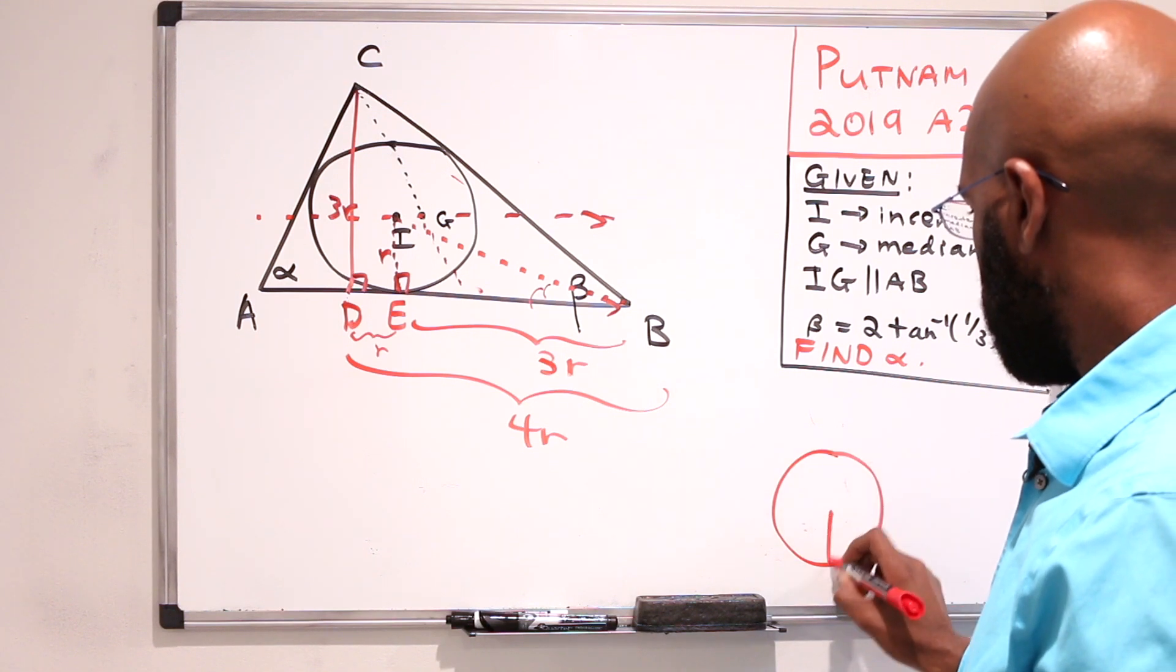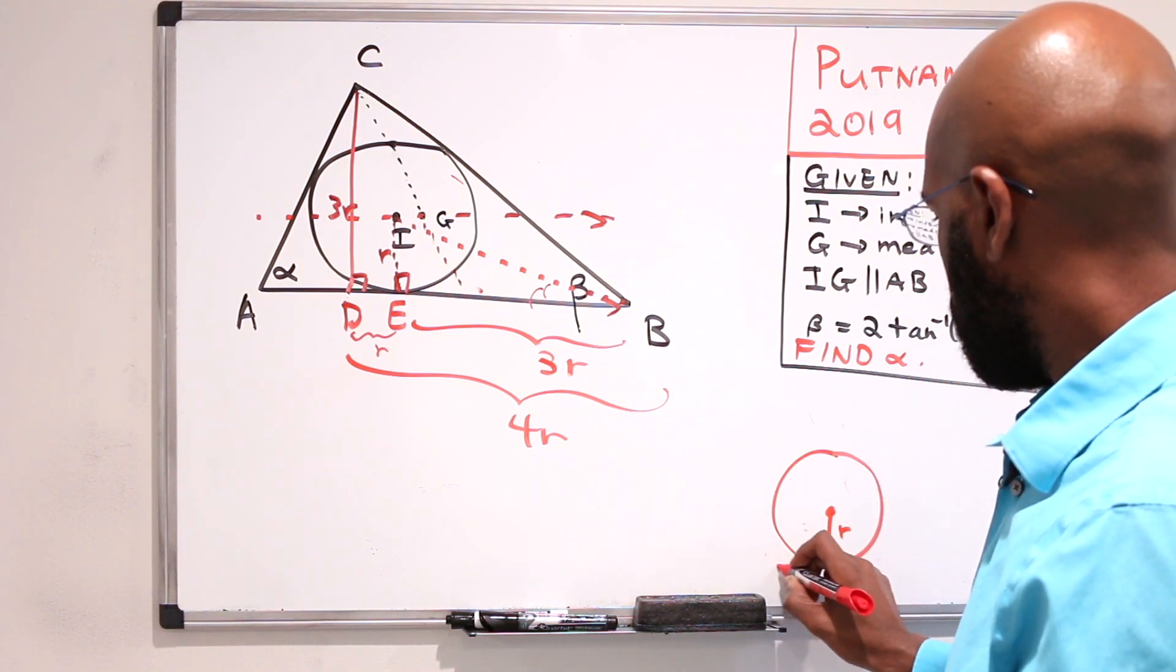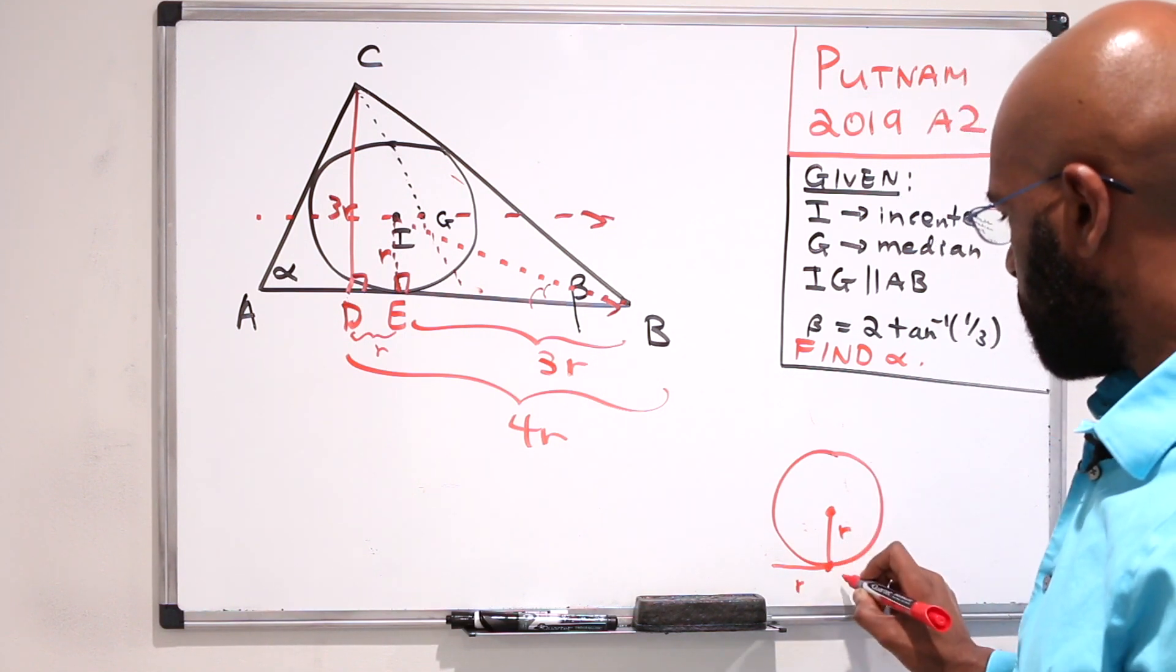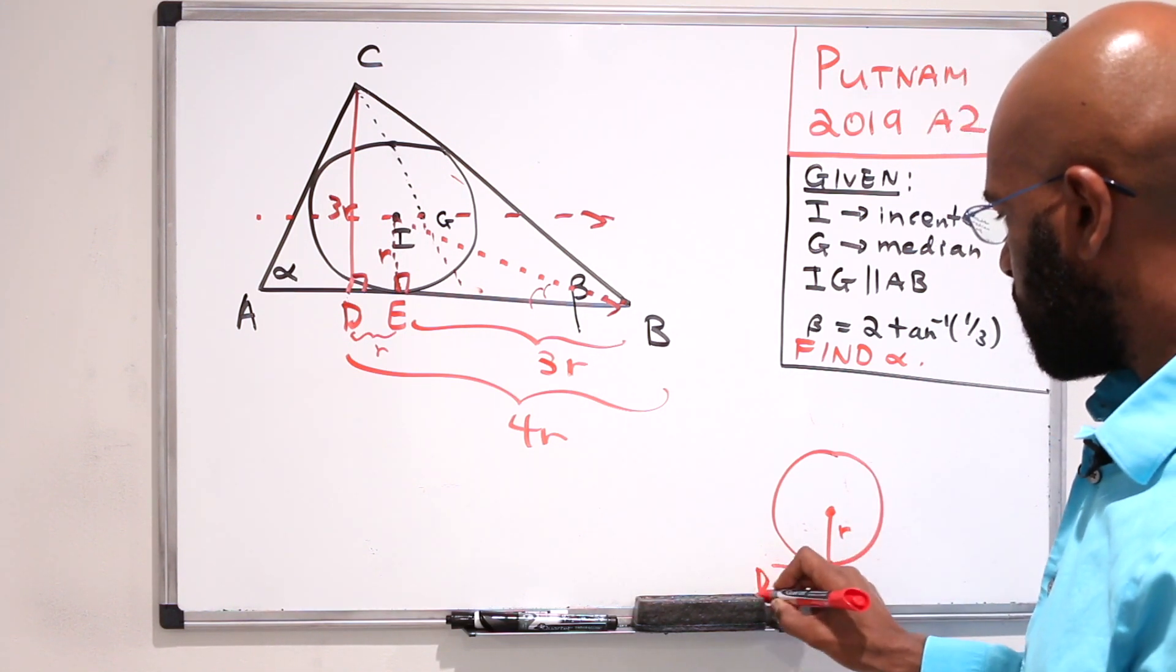This in radius is R, and then you're saying that you go R out from the foot of this point here E, and you get this point D.